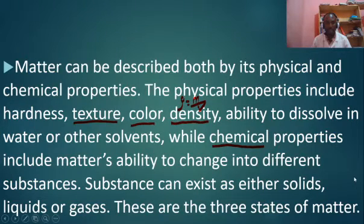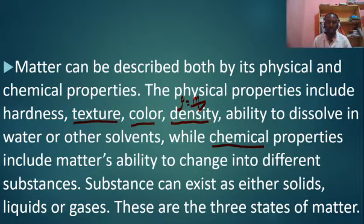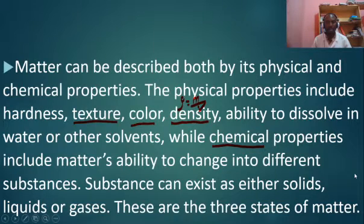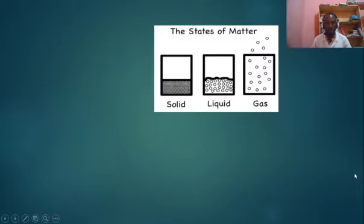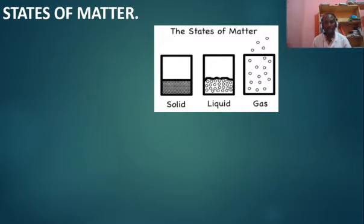Matter can be described by both its physical and chemical properties. The physical properties include hardness, texture, color, and the rest. Remember our last lesson? We saw the solid, the liquid, and the gaseous state of matter.